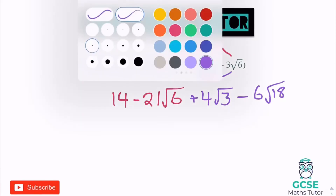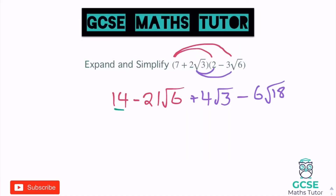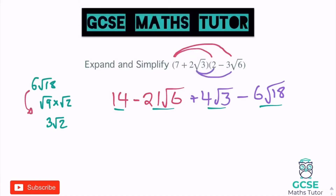We've got an interesting one here. We have 14 at the start, no number at the end. The 21 root 6 doesn't simplify — root 6 doesn't go smaller. The 4 root 3 doesn't simplify. But the 6 root 18 does simplify. Let's do that to the side: root 18 is root 9 times root 2, which is 3 root 2. Remembering it was 6 lots of 3 root 2, that's 18 root 2.